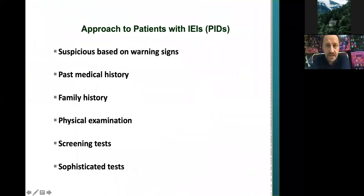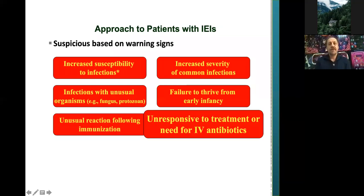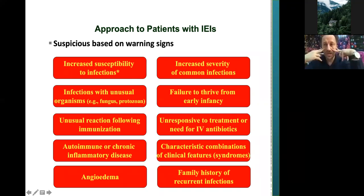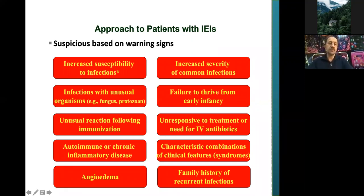To approach patients with primary immunodeficiency, we should have suspicion based on warning signs, check the past medical history, family history, then do a physical examination, and finally perform screening and sophisticated tests. There are 10 warning signs. The first is increased susceptibility to infection — meaning higher frequency of infection per year, for example two or more episodes of sinusitis per year, two or more episodes of pneumonia per year, or two or more severe infections per year.